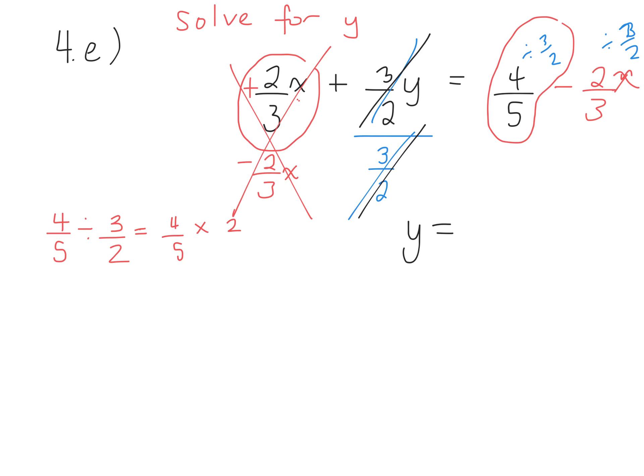Good. 4 over 5 times 2 over 3. Good. 8 over 15. Excellent. So that will be 8 over 15.